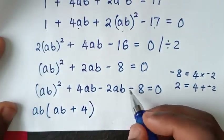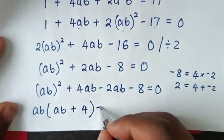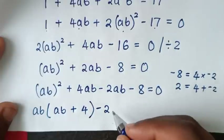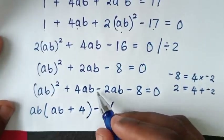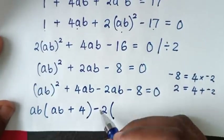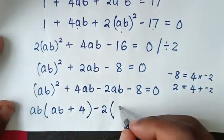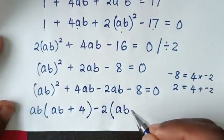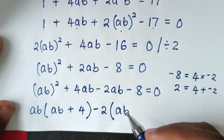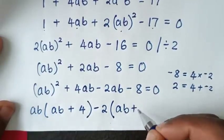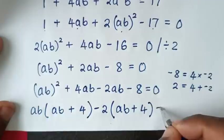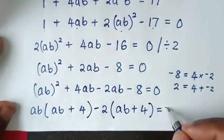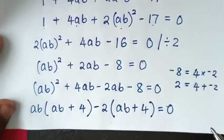Then from the remaining terms, we take -2 out of the bracket: -2(ab + 4), equals 0.